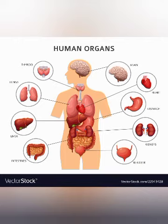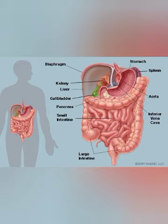Now we have to see about the organs. Different types of tissues work together to perform a particular function and form an organ. For example, digestion, blood pumping, the respiratory system, and the excretory system — many things are done by the organs. Collectively, we can say that this is the organ system.